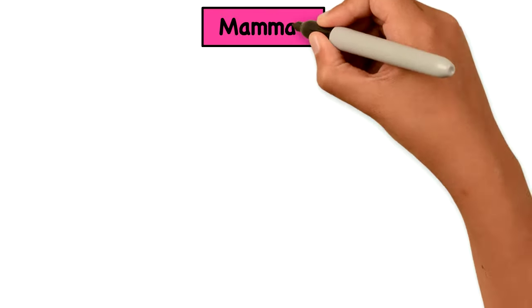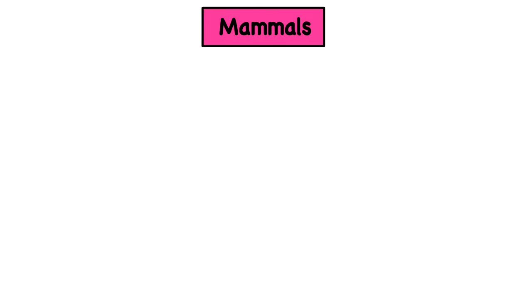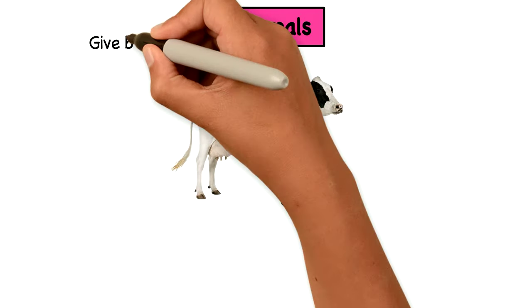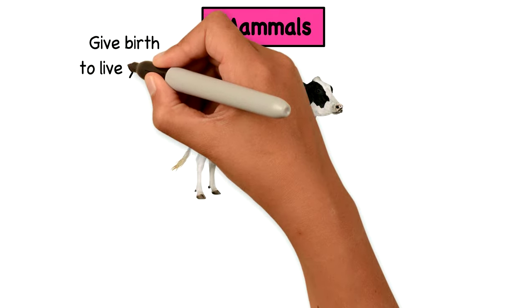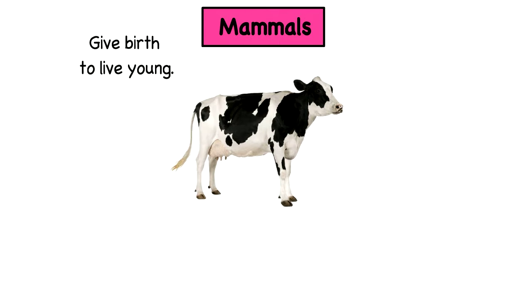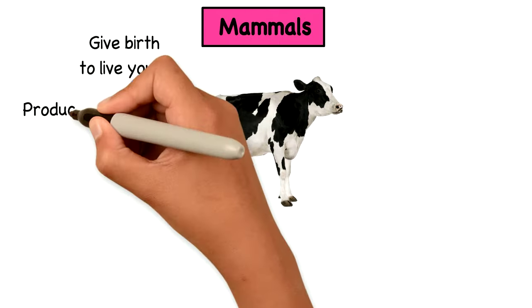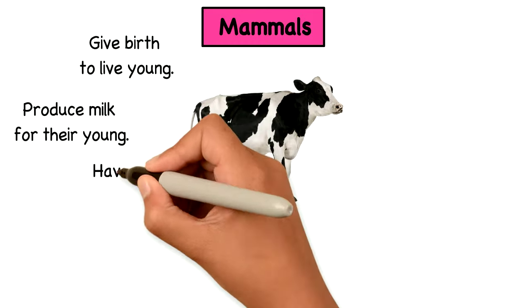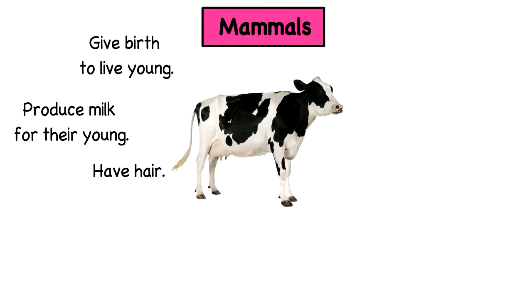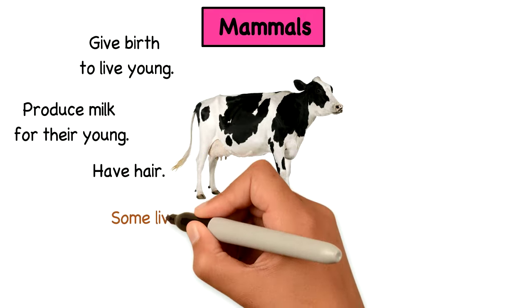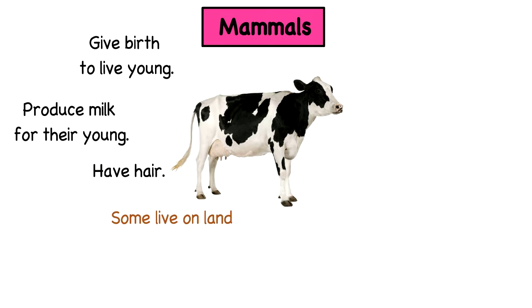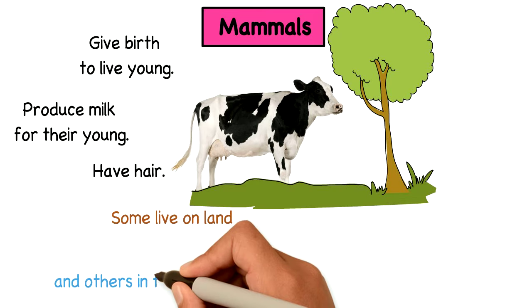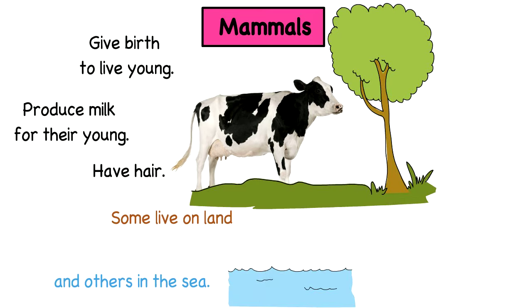Now the mammals. They give birth to live young. They also produce milk for their young, and they have hair. Some mammals live on land, and others in the sea, like the dolphin.